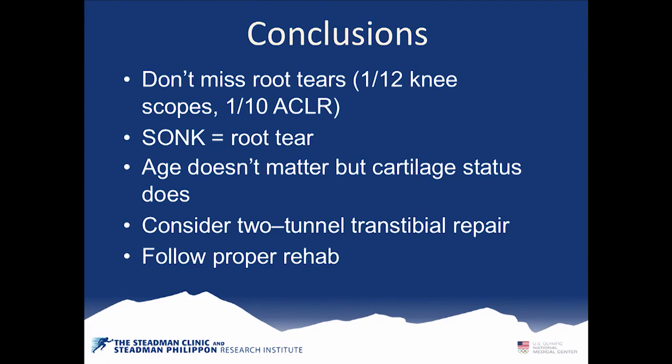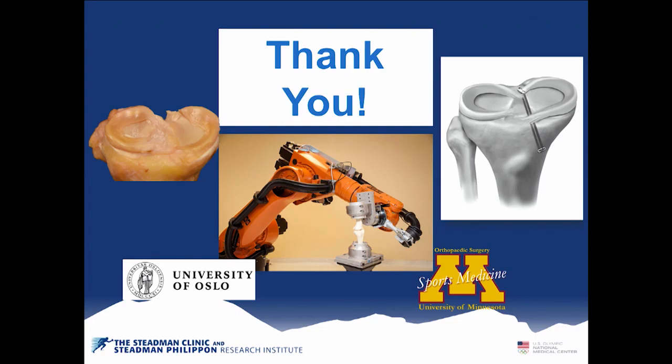In conclusion, it's important to make sure we don't miss root tears. Calculations at multiple sites suggest there may be one out of every 12 knee scopes and one out of 10 ACLs. If we see spontaneous osteonecrosis, that's a root tear until proven otherwise. Age doesn't seem to matter. These heal very well, but cartilage status does. Consider a two-tunnel transtibial repair and follow proper rehabilitation protocols to get maximal outcomes. Thank you.